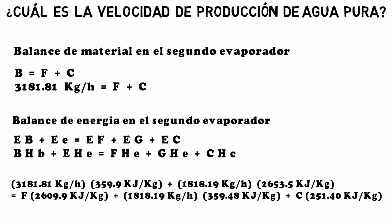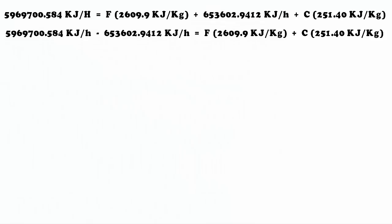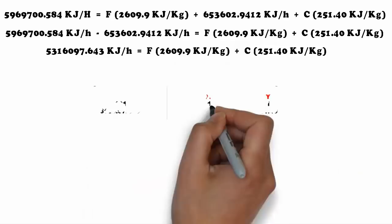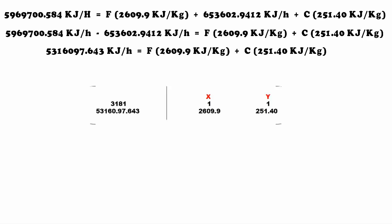After performing the arithmetic operations, the simplified equation is: 5,316,097.64 = 2609.9·F + 251.40·C. This is equation number 2.